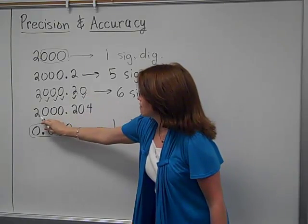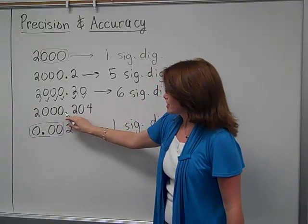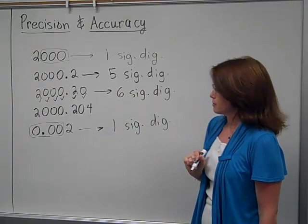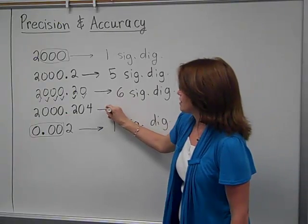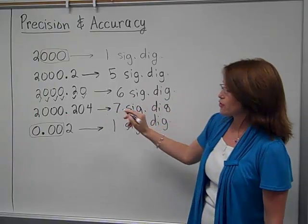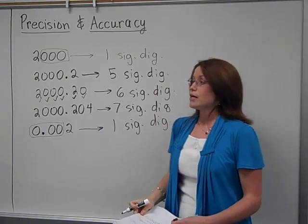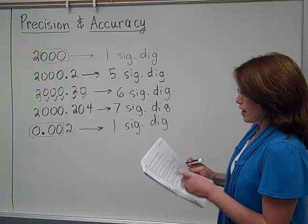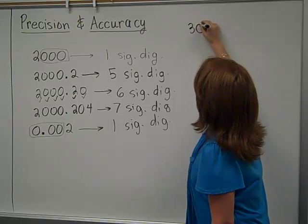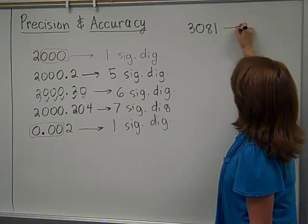So how many significant digits would you have in this number? And I'm going to read it properly: two thousand and two hundred four thousandths. Yup, you'll have seven. And those zeros in between the twos and the fours, they get to be exceptions to the rule.